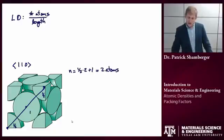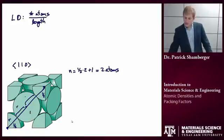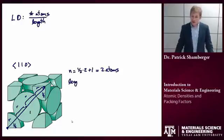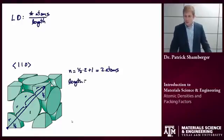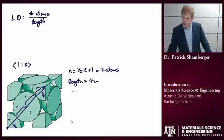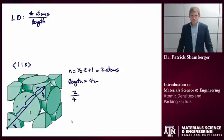What is the length of the direction I've shown? Oftentimes this is just calculated in terms of the radii of the atom. In this case, that length equals 4r. So the linear density of the [1,1,0] direction in the FCC structure is just 2 over 4r, or 1 over 2r.